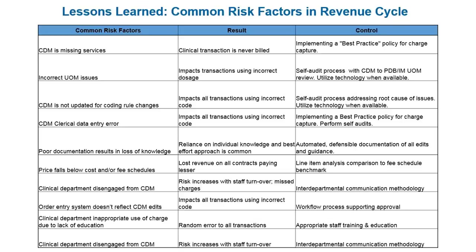The last risk factor we'll discuss today is your clinical department disengaging. If clinicians lose track or pick the wrong charge or code, you'll see increases in errors and concerns with staff turnover. If staff gets discouraged because information isn't available to them, wrong information goes out on claims, interdepartmental communication breaks down, and you're back where you started. Make sure you're putting all the tips, methodologies, and best practices discussed throughout this series into effect to address these risk factors with real controls and positive outcomes.